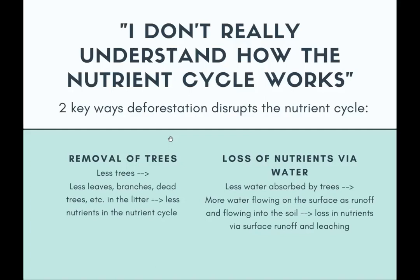Another way deforestation disrupts the nutrient cycle is through the loss of nutrients via water. Less water will be absorbed by trees since they're gone, so more water is available for two processes. First, more water flows on the surface as runoff. Second, more water flows into the soil. This leads to loss of nutrients via surface runoff — water running on the surface and washing nutrients away — and also loss of nutrients via leaching, which is the vertical downward flow of water bringing nutrients away from plant roots.